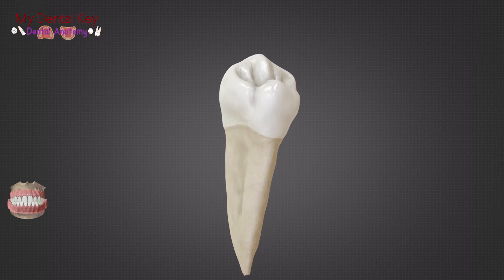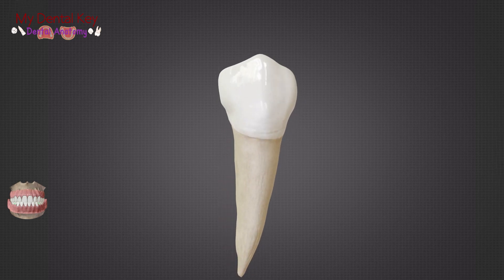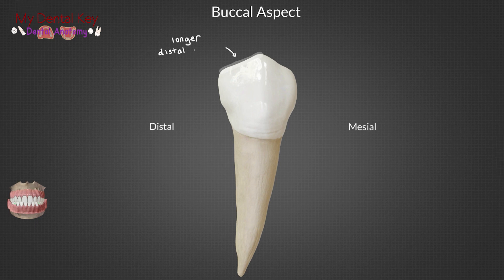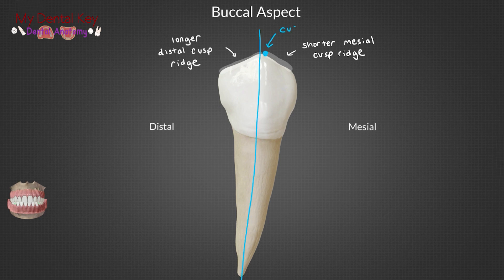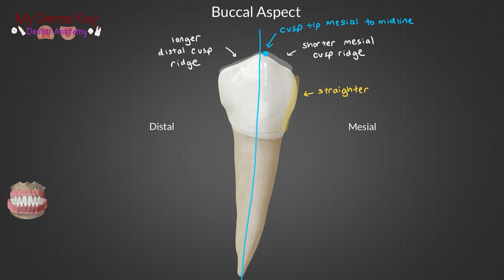Now we will take a look at all aspects of the tooth, beginning at the buccal. In the buccal aspect, we can see that the distal cusp ridge is longer than the mesial cusp ridge. Because of this, the buccal cusp tip is slightly mesial to the midline. The mandibular first premolar has a particularly pointy buccal cusp tip, especially when compared to the mandibular second premolar. We can also see from this view that the mesial side of the tooth is straight, while the distal side of the tooth is somewhat bulbous.